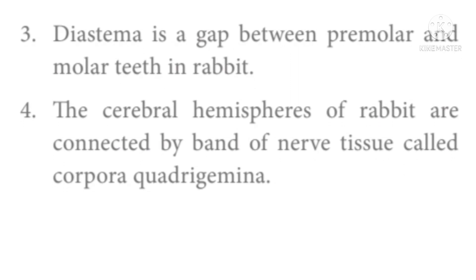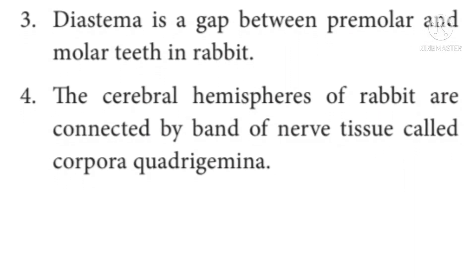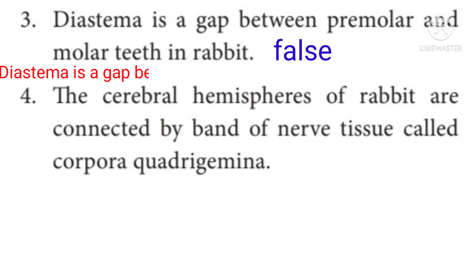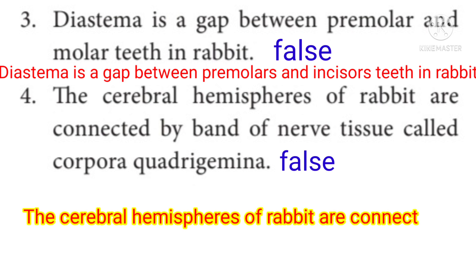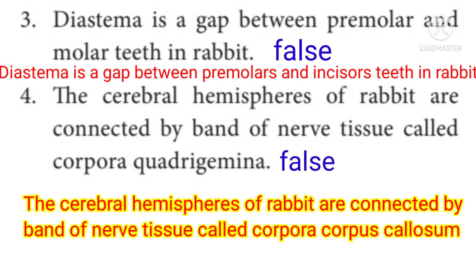Question 3: Diastema is a gap between premolar and molar teeth in rabbit — False. The correct statement is: diastema is a gap between the premolar and incisor teeth in rabbit. Question 4: The cerebral hemispheres of rabbit are connected by a band of nerve tissue called Corpora Quadrigemina — False. The correct statement is: the cerebral hemispheres of rabbit are connected by a band of nerve tissue called Corpus Callosum.